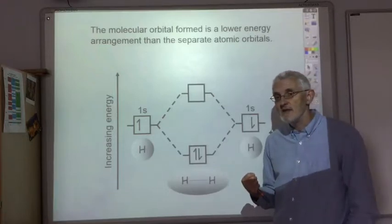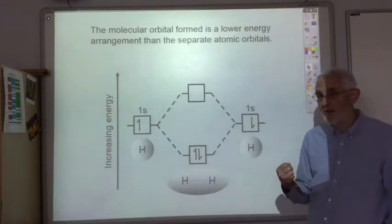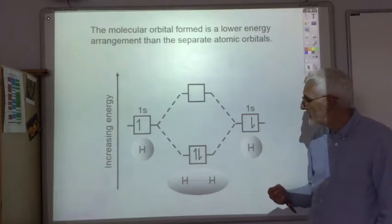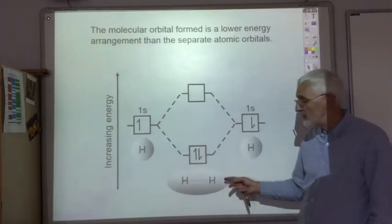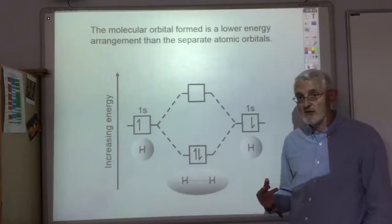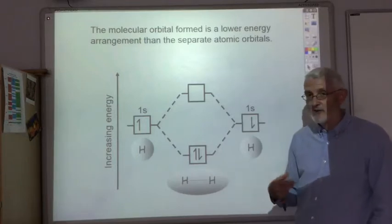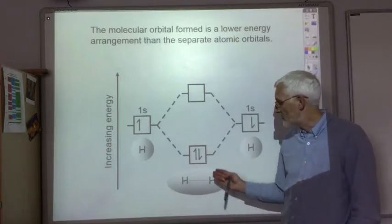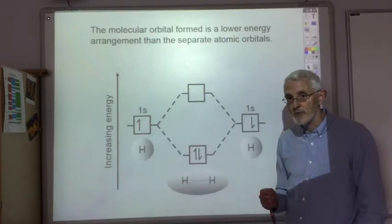Since a hydrogen molecule forms a pure covalent bond, what we find is that the molecular orbital is symmetrical, because the electrons are not attracted to one atom more than the other. So you get a totally symmetrical molecular orbital.